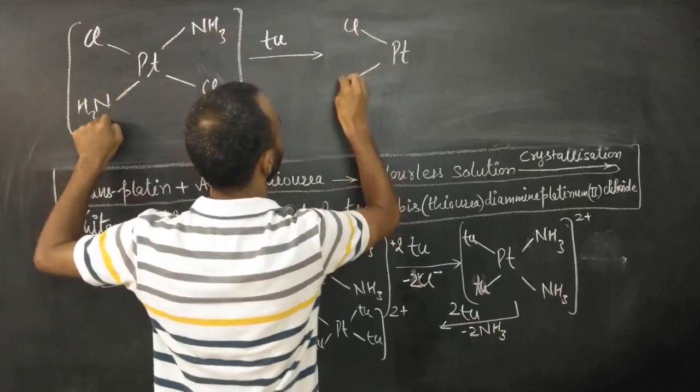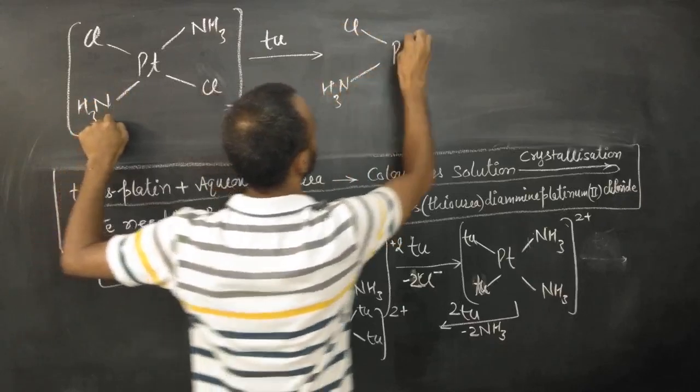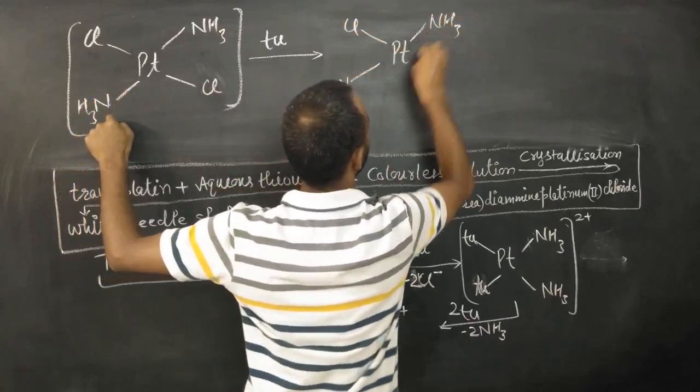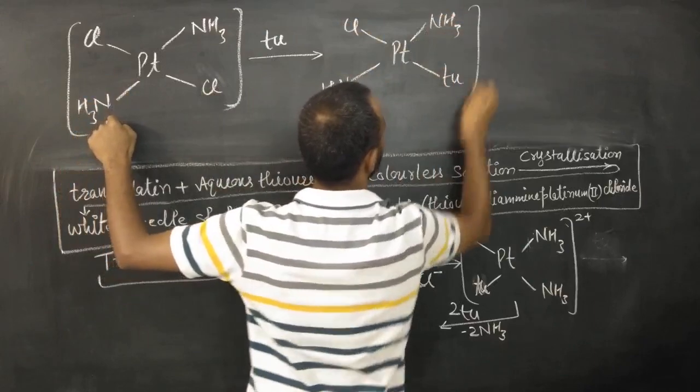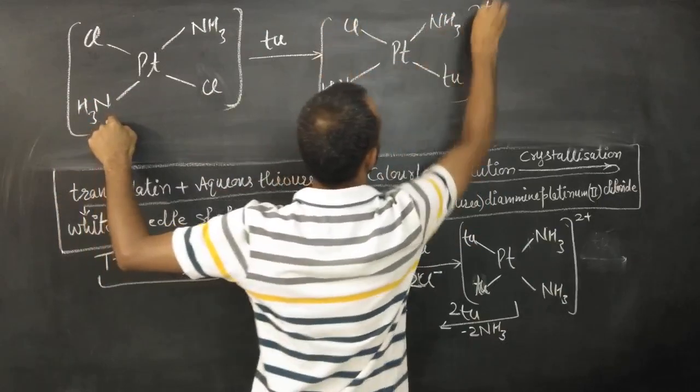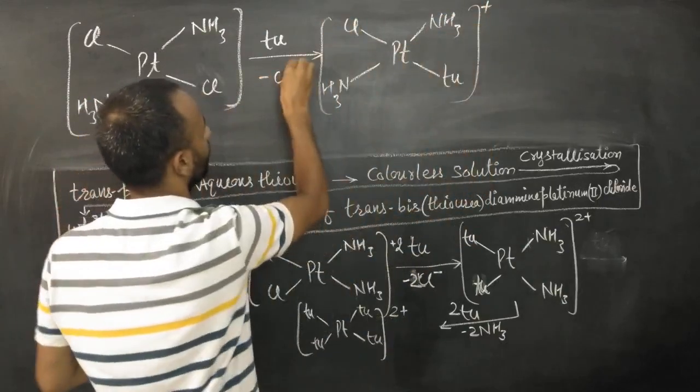Pt, Cl, NH3, NH3, and TU, one positive. One Cl-negative is removed.